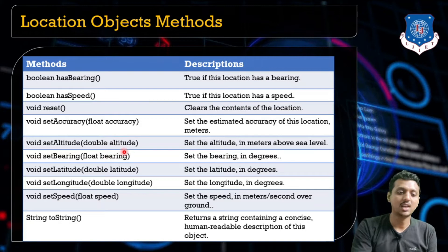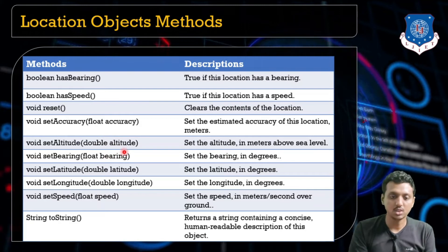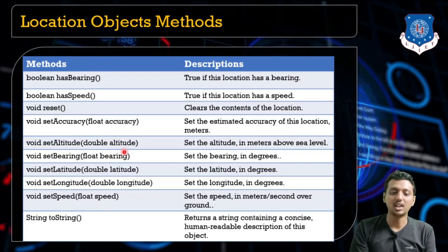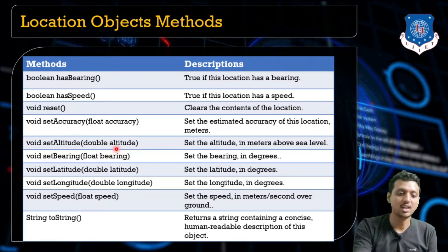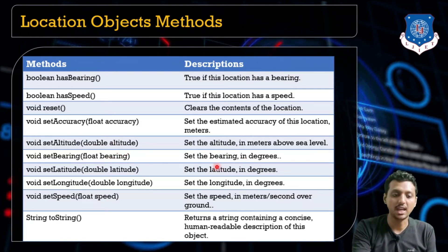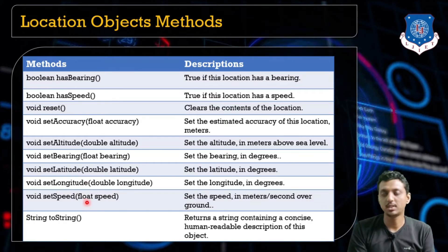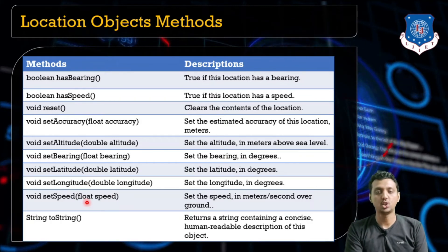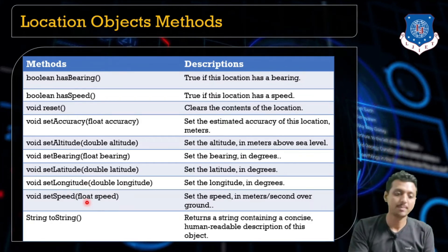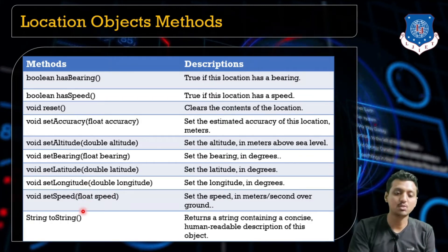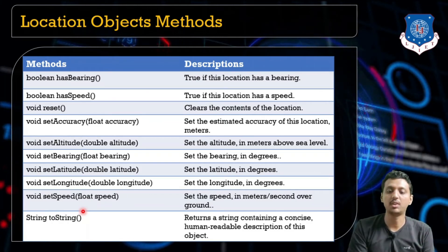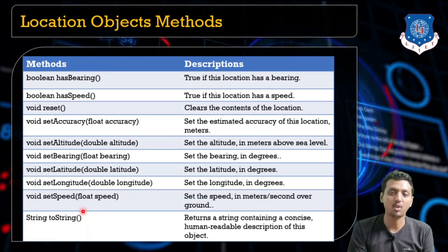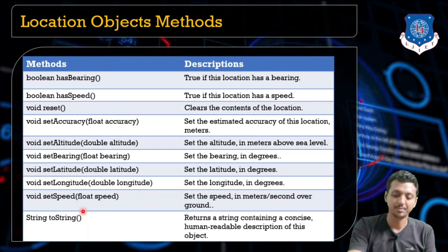void setAltitude() sets the altitude. setBearing() sets the bearing. setLatitude() and setLongitude() are used to set latitude and longitude. setSpeed() sets the speed. toString() converts the object into the form of a string.